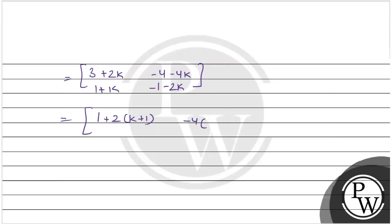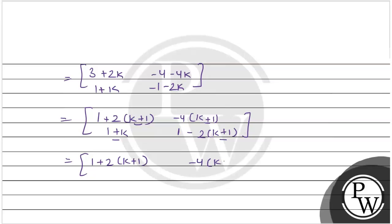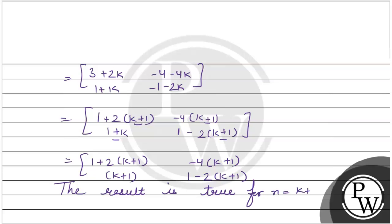We can write 3+2K in K+1 form as 1+2(K+1), since 1+2(K+1) = 2K+2+1 = 3+2K. Similarly, -4-4K = -4(K+1). And 1+K can be written as (K+1). And -1-4K can be written as 1-2(K+1). So the result is true for n = K+1.